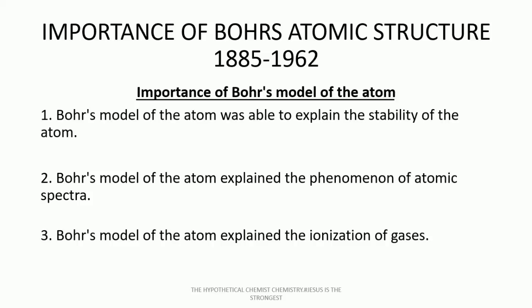Bohr's model of the atom explained the ionization of gases by making us know that an atom can indeed remove or donate an electron. In other words, an electron can move from either a higher energy level to a lower energy level, or from a lower energy level to a higher energy level. When an electron moves from a higher energy level to a lower energy level, we call it de-excitation, and when it moves from a lower energy level to a higher energy level, we term it excitation. I have the link to that particular lesson below — click and watch it for further understanding.